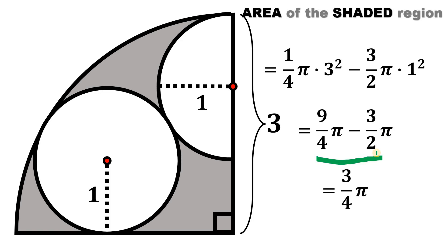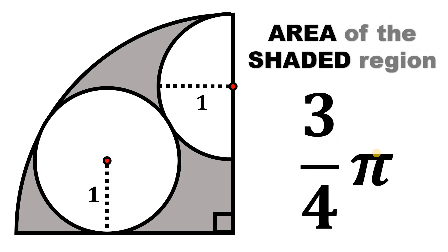This is the area of the shaded region — and this is our answer to this question. Therefore, given this figure, the area of the shaded region simply equals three over four times pi square units.